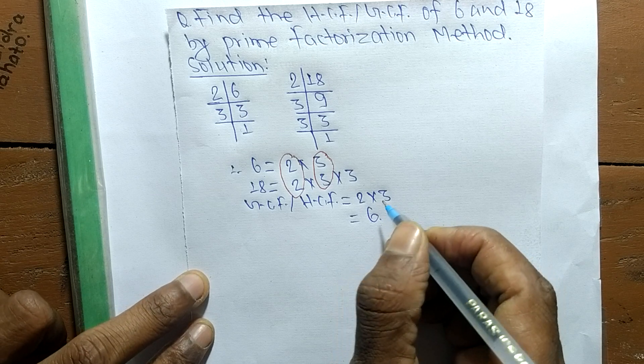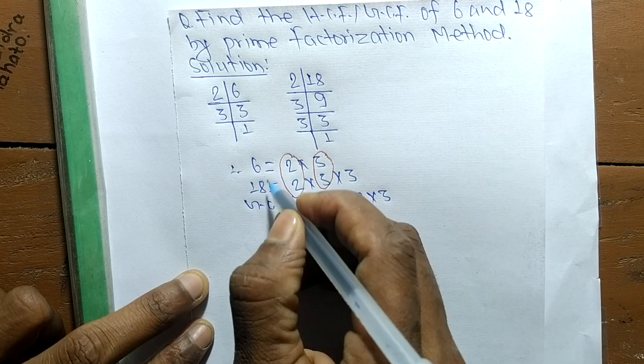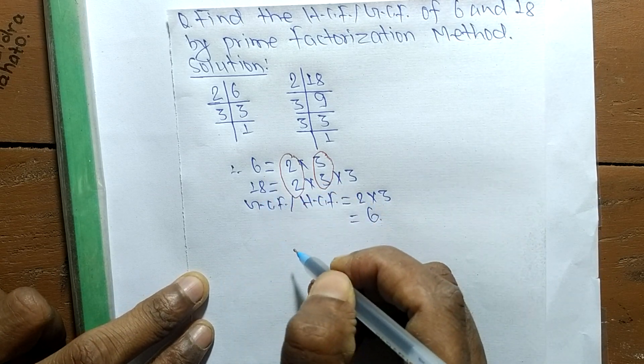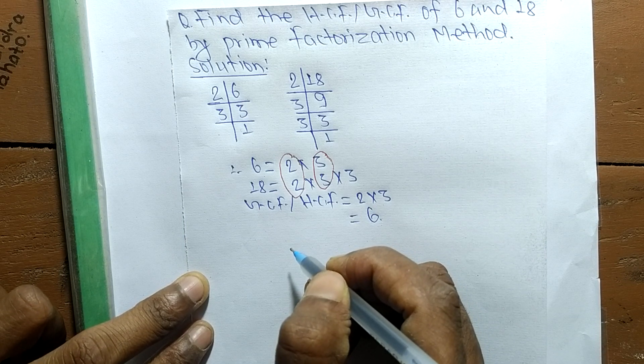So 6 is the GCD or HCF of 6 and 18. This much for today, and thanks for watching.